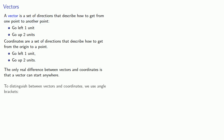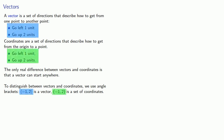To distinguish between vectors and coordinates, we typically use angle brackets. So the angle bracket notation ⟨-1, 2⟩ is a vector, while parenthesis notation (-1, 2) is a set of coordinates. In both cases, they specify the same directions — go left 1 and up 2. The only difference is that with coordinates we know we're starting from the origin, but with a vector we know these are directions from some point to another point.